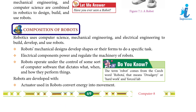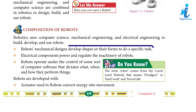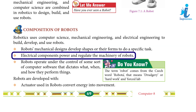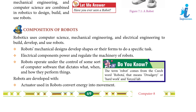Composition of Robots: Robotics uses computer science, mechanical engineering, and electrical engineering to build, develop, and use robots. A robot's mechanical design develops its shape or form to perform a specific task. Electrical components power and regulate the machinery of robots. Robots operate under the control of computer software that dictates what, when, and how they perform things. Did you know? The term 'robot' comes from the Czech word 'robota,' meaning drudgery or hard, forced labor.